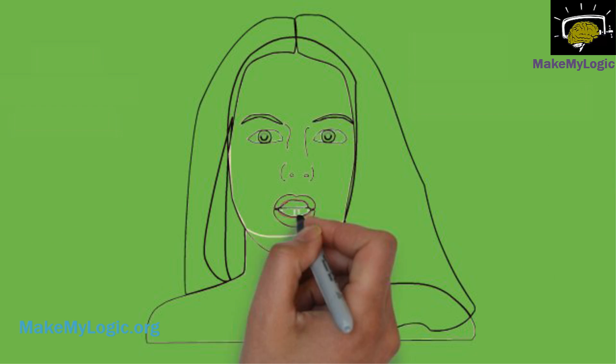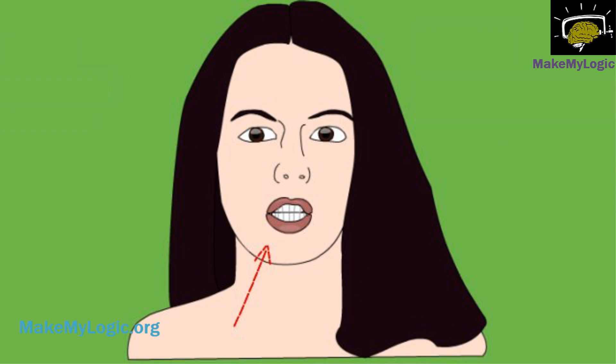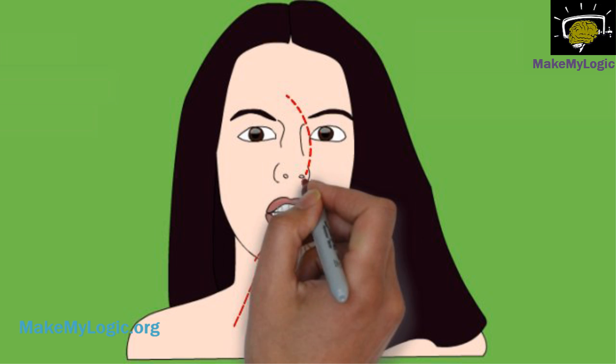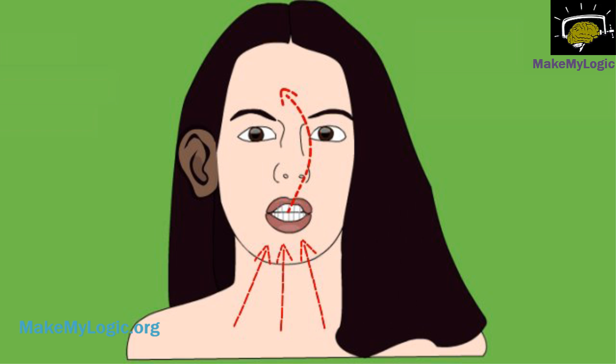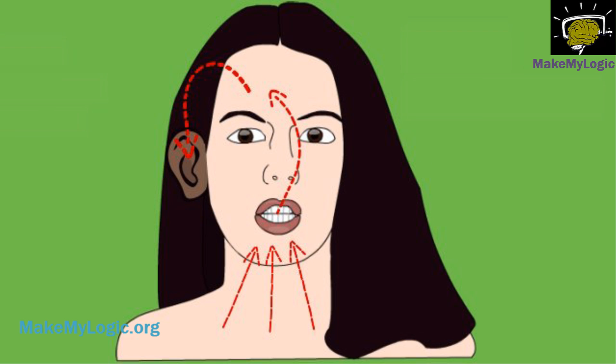When we speak, our voice travels from our vocal cords to our mouth, then through the bone and cartilage in our skull and finally reaches our ears. This process is called bone induction.